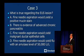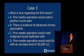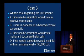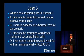What is true regarding this lesion? A) Fine needle aspiration would yield a positive mucin stain. B) There is evidence of advanced chronic pancreatitis. C) Fine needle aspiration would yield malignant ductal epithelial cells. D) Fine needle aspiration would yield fluid with an amylase level of 50,000 units per liter.